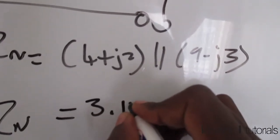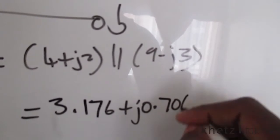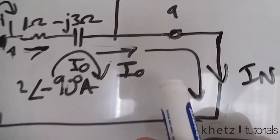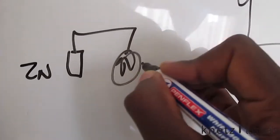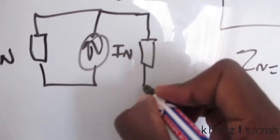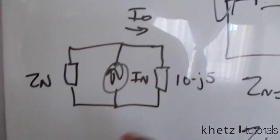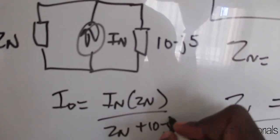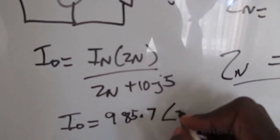Computing that parallel combination, the Norton equivalent impedance is 3.176 + j0.706 ohms. For the second part of the problem, we use the Norton equivalent circuit — which has IN and Z_N — to find IO across the load of (10 − j5) ohms. Using current division, the answer is 985.7 milliamperes at an angle of negative 2.1 degrees.